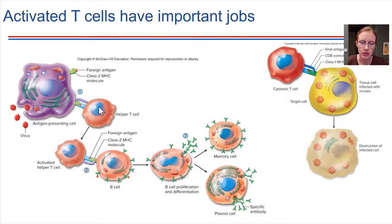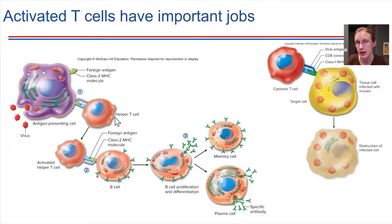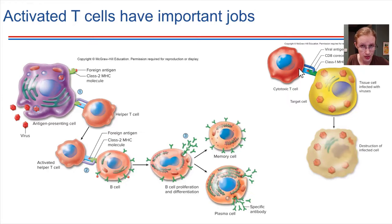These helper T cells — the ones recognizing infection and initiating these events — are actually the cells that HIV, human immunodeficiency virus, infects. If the virus is infecting the helper T cell, it's hidden inside one of the immune cells and there's no way for the body to clear that infection. Over time, the T cells die, leaving the host susceptible to other infections. If helper T cells are gone, there's no way to ramp up the activity of B cells and cytotoxic T cells. We do have antivirals at this point that help keep the infection from ramping up, but there's currently no way to clear the infection altogether.